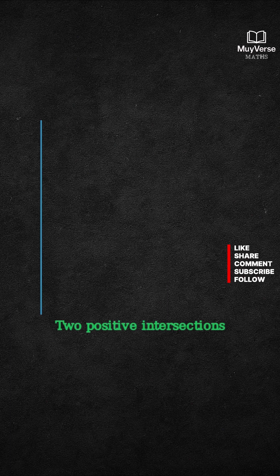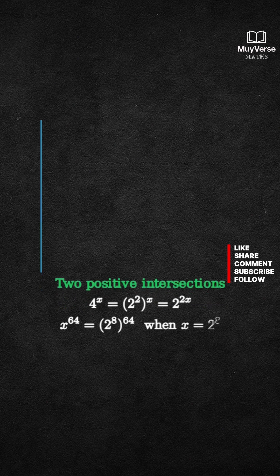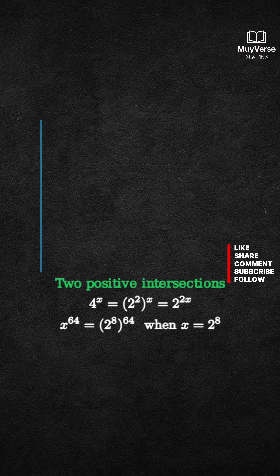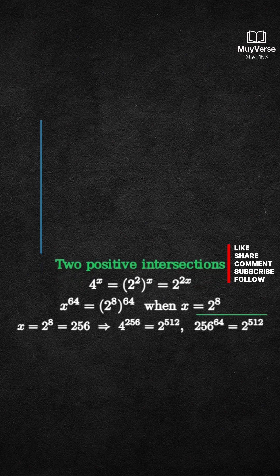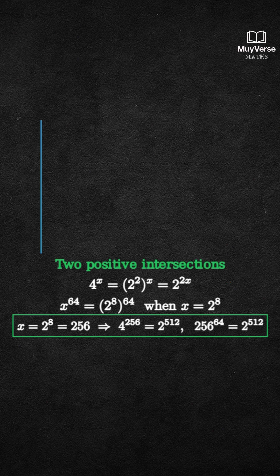Step 4. Why exactly 256? Because 4^x is 2^(2x), and x^64 equals 2^(8×64) when x equals 2^8. Set x equal to 2^8 equals 256. We get 2^512 on both sides. Exact equality.